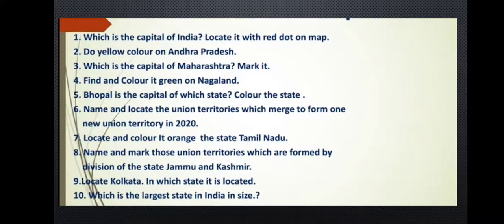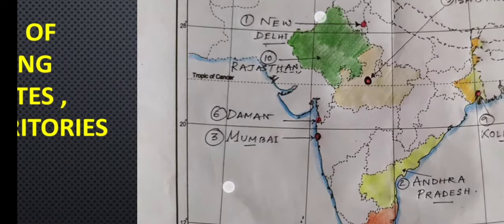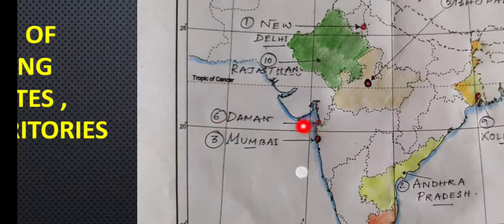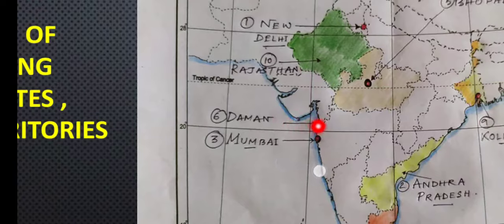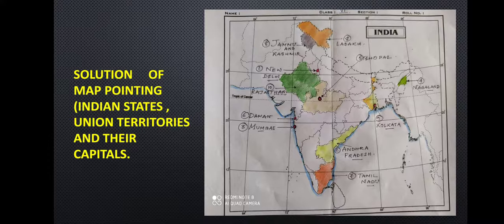Number six: name and locate the union territories which merged to form one new union territory in the year 2020. The answer is Daman and Diu and Dadra and Nagar Haveli. These two union territories merged together and formed one new union territory called Daman. Here is Daman, here is Diu, and just beside Daman is Dadra and Nagar Haveli. All these have merged into one union territory. It is located along the coast of Gujarat, near the border of Maharashtra and Gujarat. This is an important and recent question, and you should practice it properly.